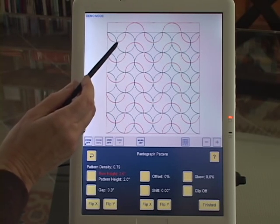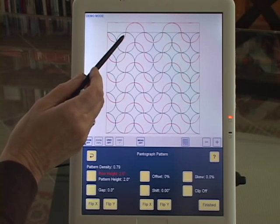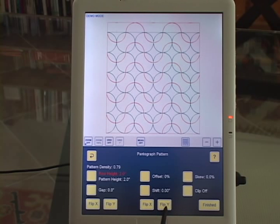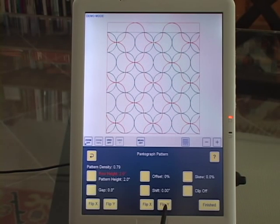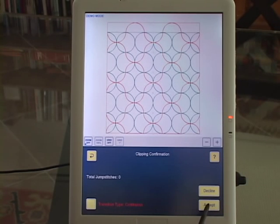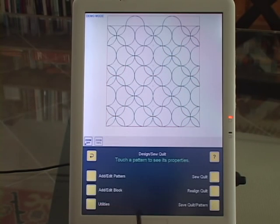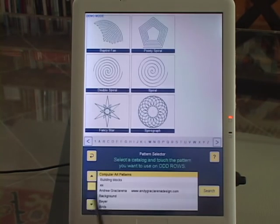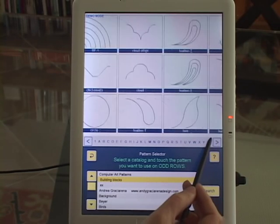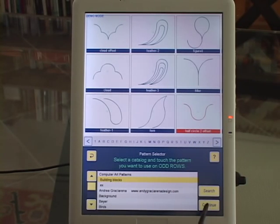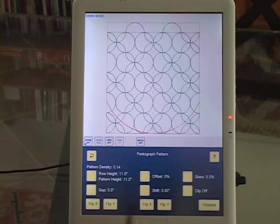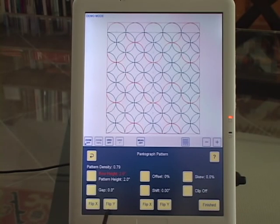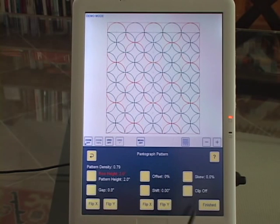And can you see now how I'm beginning to get the orange peel effect here? Again, I'm going to flip Y. All right, finished, finished, accept yes. Add Edit Pattern, Add Pattern, Pantograph, use current block. Again, half circle two offset. Pattern height two inches. This time I'm going to flip Y here. And now you can see the orange peel.